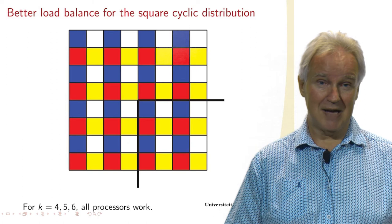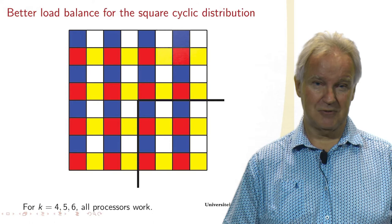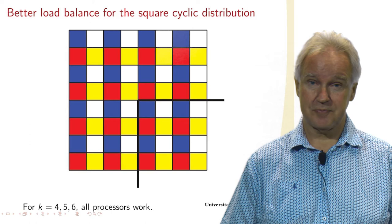On the other hand, if we use the cyclic distribution, you see that halfway still all processors are in the game, so they all still work. And only at the last step for K equals 7, the yellow only one processor is working, the yellow one.